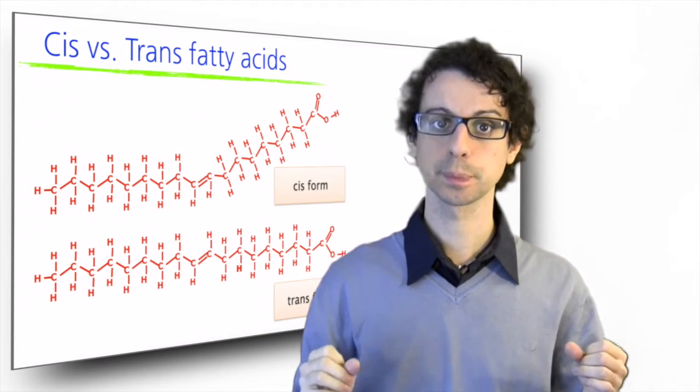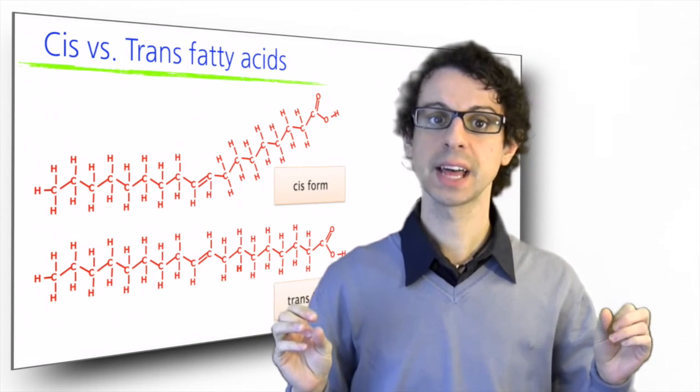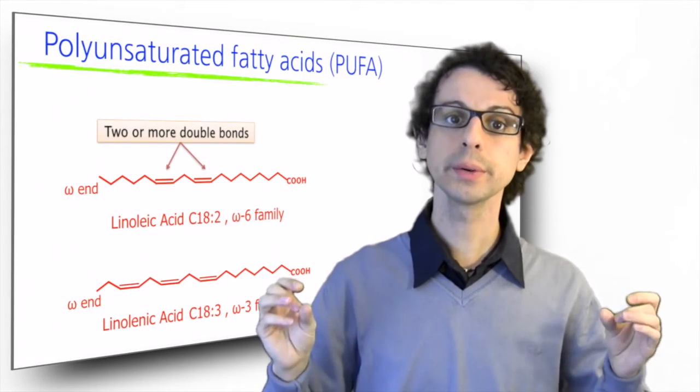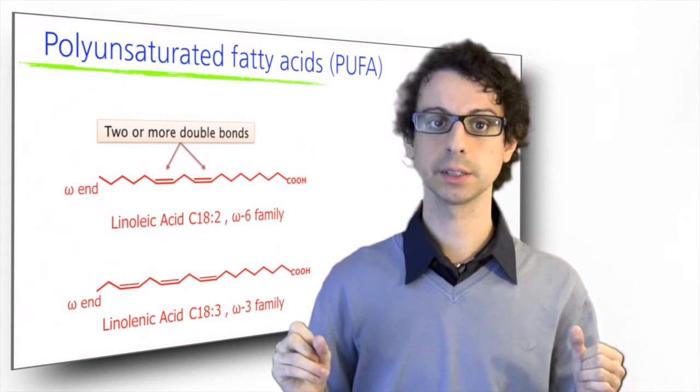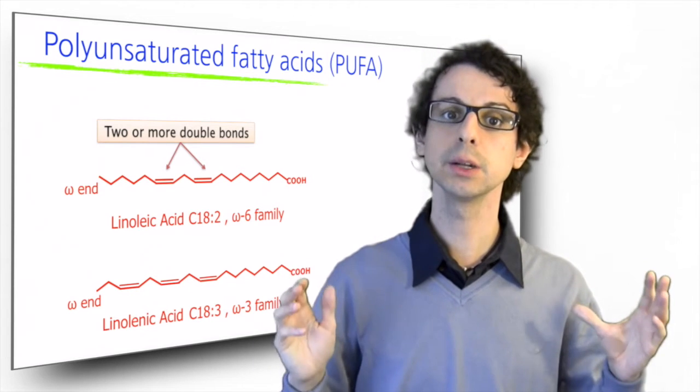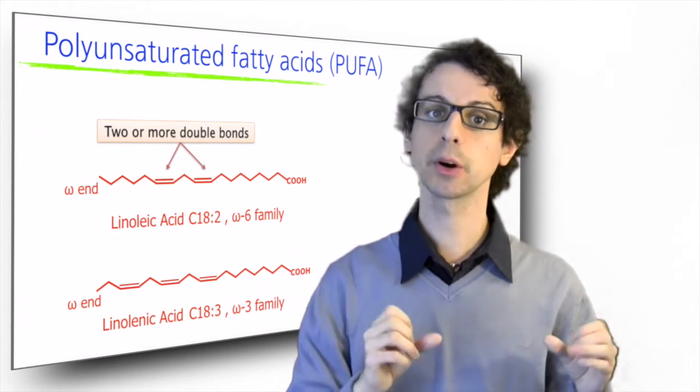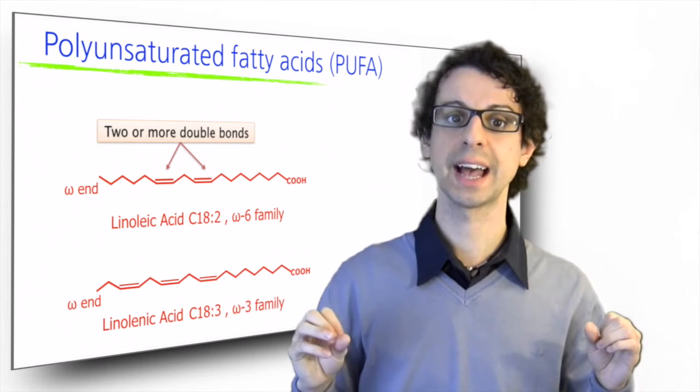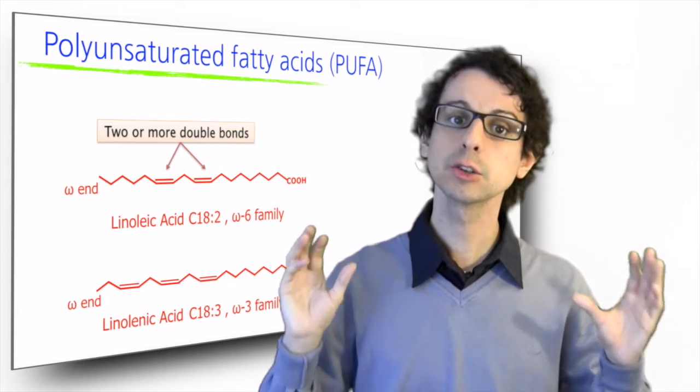When an unsaturated fatty acid has more than one double bond, two or more, we refer to it as a polyunsaturated fatty acid. This molecule here is linoleic acid, a very important polyunsaturated fatty acid, one of the two essential fatty acids in our diet. It has two double bonds.